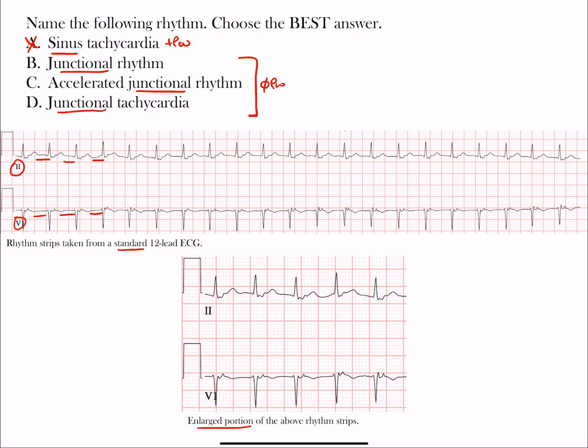How do you differentiate these junctional rhythms? A regular junctional rhythm has a rate between 40 and 60 beats per minute. An accelerated junctional rhythm has a rate between 60 and 100 beats per minute. Junctional tachycardia, like any other tachycardia, has a rate above 100 beats per minute.